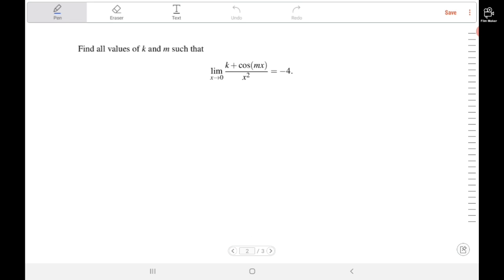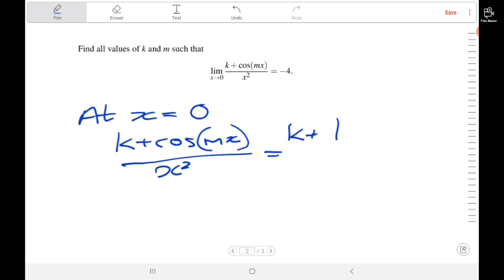Generally when we have a limit like this, the first thing to do is see what happens when we substitute 0 in for x. So at x equals 0, we have k plus cosine of mx. Cosine of 0 is 1, so this becomes k plus 1. And in the denominator, x squared becomes 0.